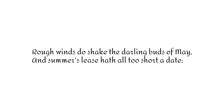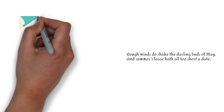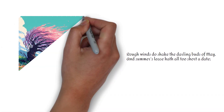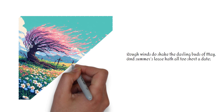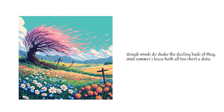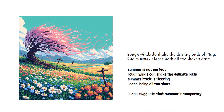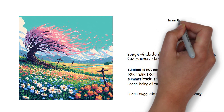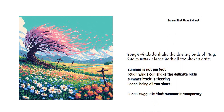"Rough winds do shake the darling buds of May, and summer's lease have all too short a date." Shakespeare points out that summer is not perfect. Rough winds can shake the delicate buds of May, and summer itself is fleeting, with its lease being all too short. The metaphor of a lease suggests that summer is temporary, like a rental agreement that soon comes to an end.